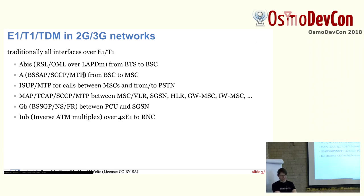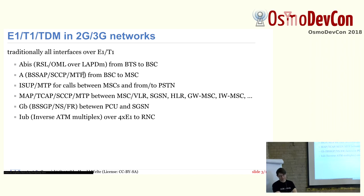Basically, traditionally everywhere. ABIS was over E1 using LapDM as layer 2. The A interface was over E1 using MTP. ISUP between MSC and MSC is over E1. The MAP protocol stack is over MTP over E1. Also the Gb interface from the PCU to the SGSN was over E1 using frame relay as layer 2, and IUB over inverse ATM multiplex was spoken over bundled E1 interfaces to the RNC.